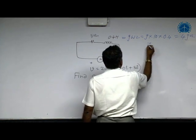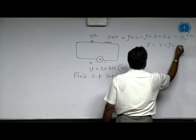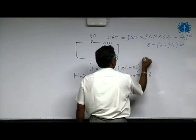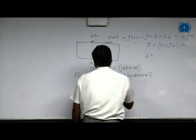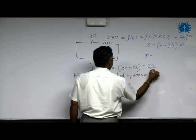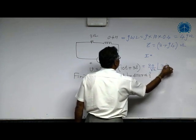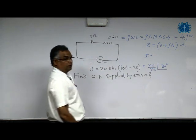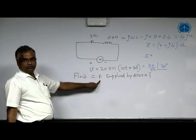Then total impedance Z is 3 plus J4. The phasor voltage is 20 by root 2 at an angle of 30 degrees. This 20 by root 2 is RMS; compulsory we should take RMS only because we are dealing with power.